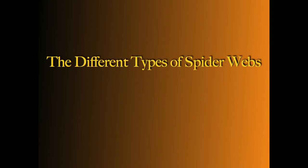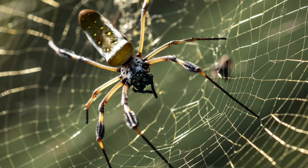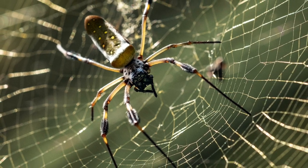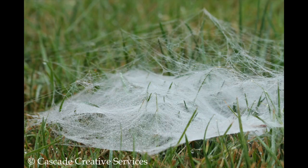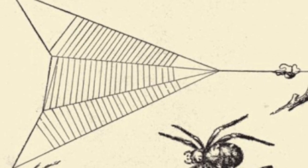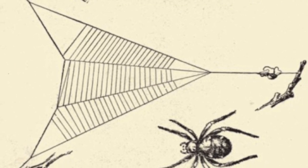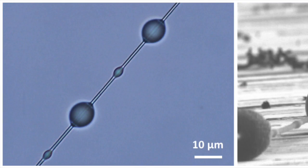The different types of spiderwebs. According to Wikipedia, spiders produce silk from their spinneret glands located at the tip of their abdomen. Each gland produces a thread for a special purpose — for example, a trailed safety line, sticky silk for trapping prey, or fine silk for wrapping it.